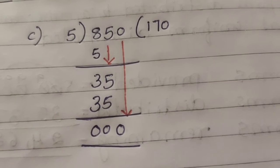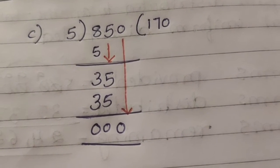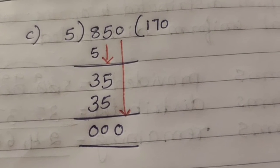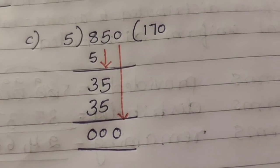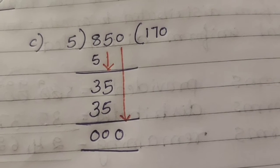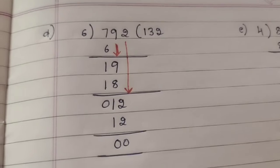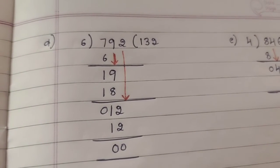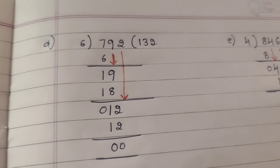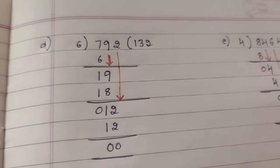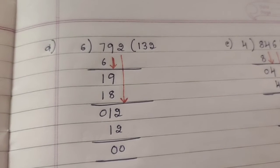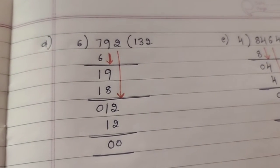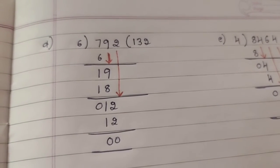Third question: 850 divided by 5. 5 ones are 5; 8 minus 5 is 3. Bring down 5, making 35. 5 sevens are 35; 35 minus 35 is 0. Bring down 0; 0 zeros are 0. Fourth question: 792 divided by 6. 6 ones are 6; 7 minus 6 is 1. Bring down 9, making 19. 6 threes are 18; 19 minus 18 is 1. Bring down 2, making 12. 6 twos are 12; 12 minus 12 is 0.